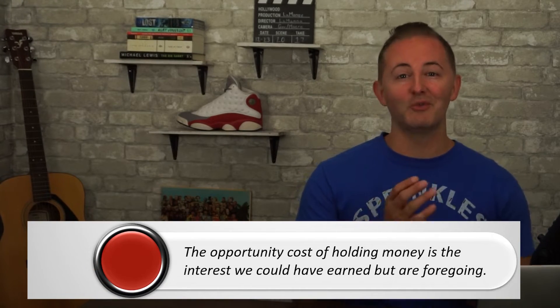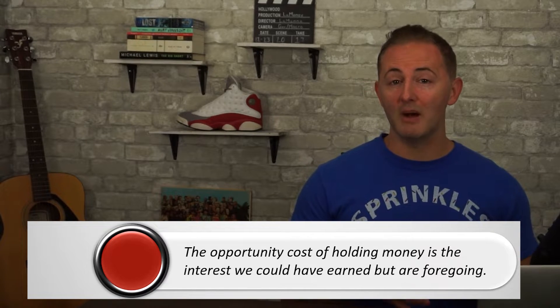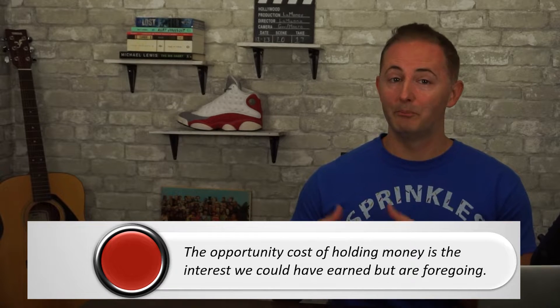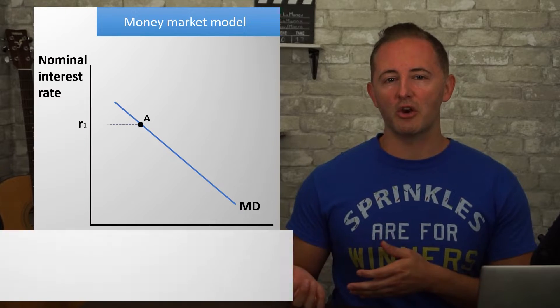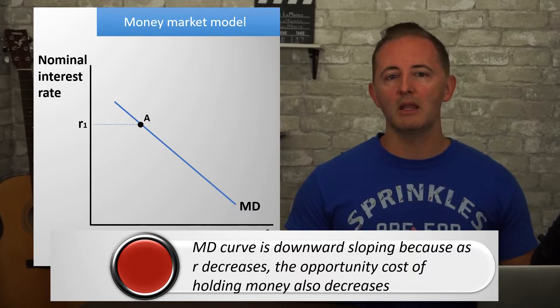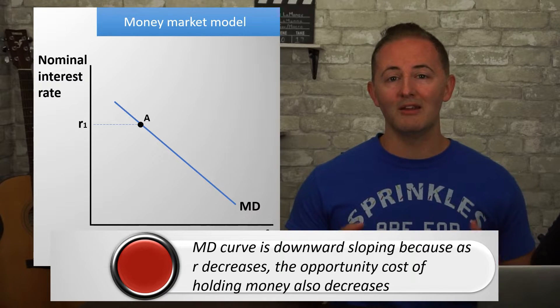Therefore, we hold only enough money to make it easy for us to buy stuff so that the rest of our wealth can earn interest. The opportunity cost of holding money is the interest we could have earned but are foregoing. The MD curve is downward sloping because as the nominal interest rate decreases, the opportunity cost of holding money also decreases, so we demand a larger quantity of money.